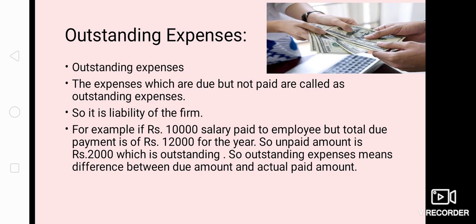For example: rupees 10,000 salary was paid to the employee, but the total due payment for the year is rupees 12,000. Total due payment was 12,000; we paid only 10,000. The unpaid amount is rupees 2,000, which is outstanding. Unpaid and outstanding have the same meaning here. Outstanding expenses means the difference between the due amount — what was supposed to be paid — and the actual paid amount. That difference is the outstanding expenditure, which is rupees 2,000.